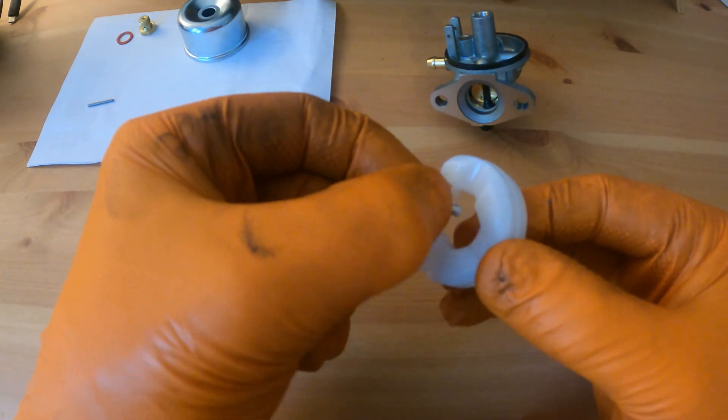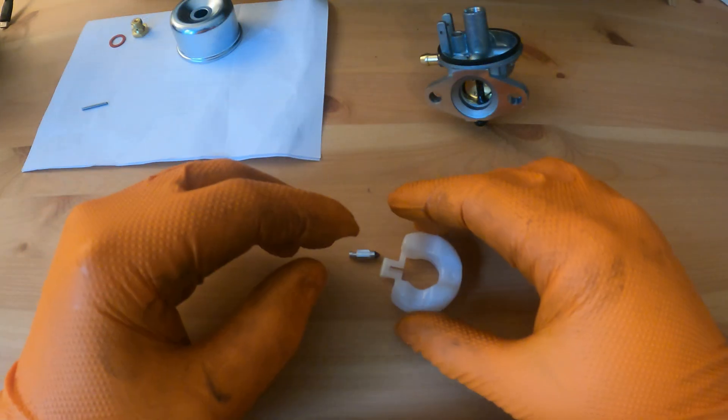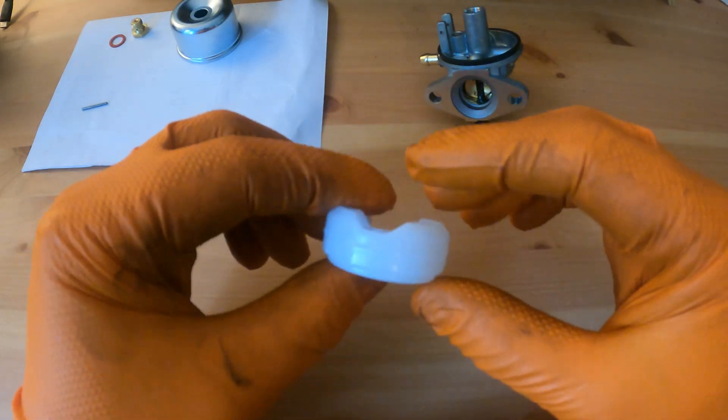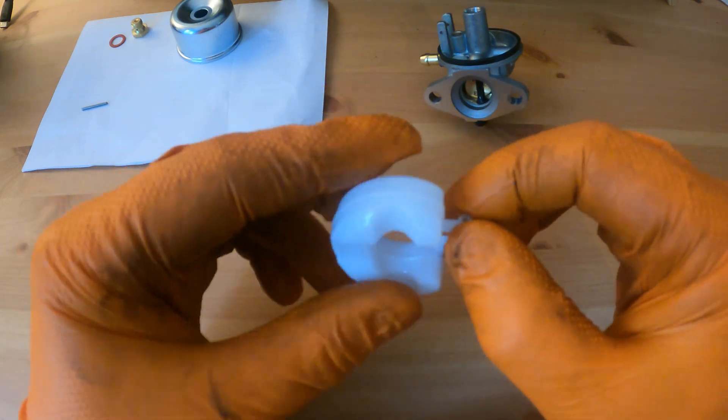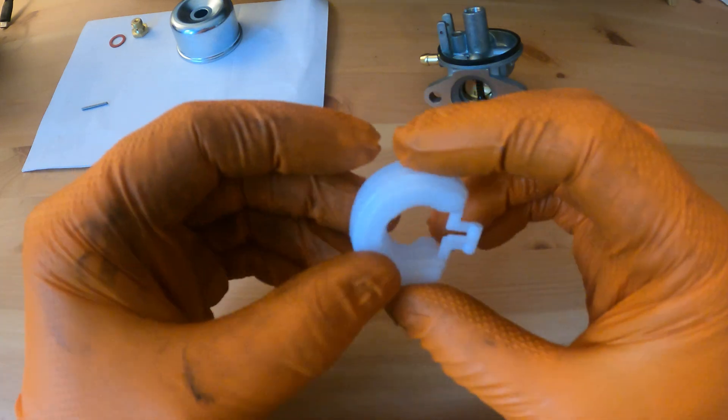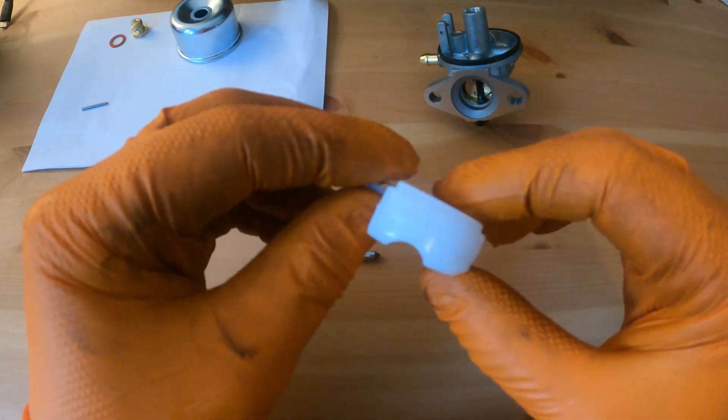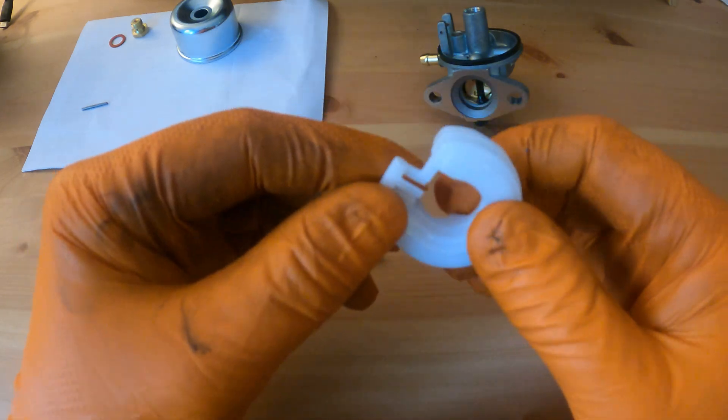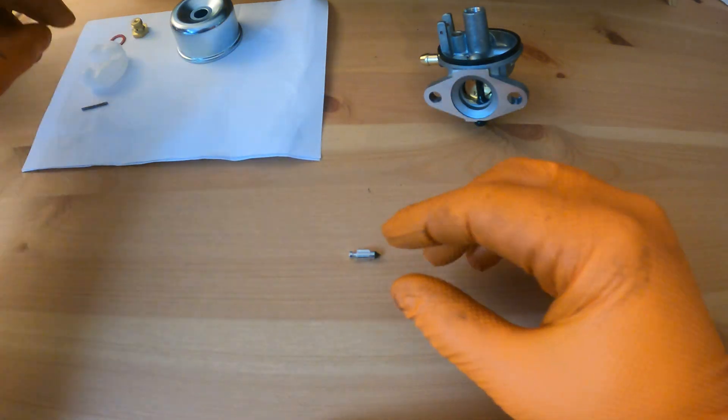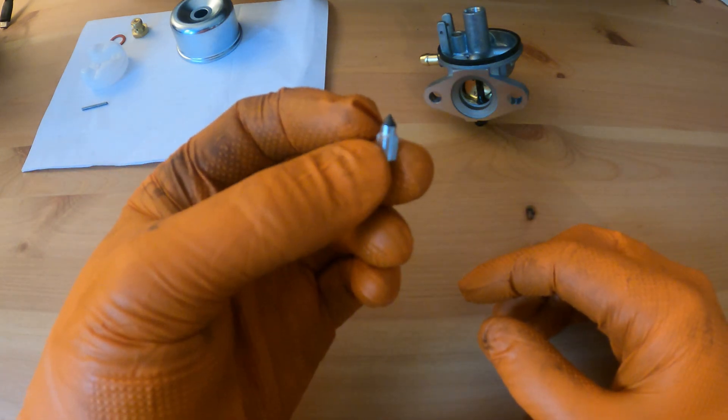We'll inspect these now. We'll inspect the float first. This is a plastic float, the older ones were made of brass but these plastic ones tend to hold up all right. We're just looking for any damage, any cracks, or any fluid ingress that could alter the float level. This one is perfect. We'll move on to the inlet needle.